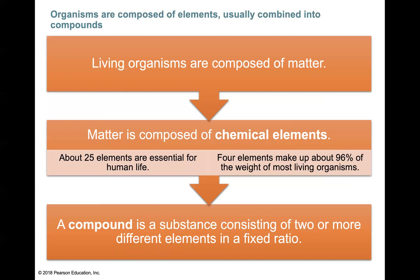At this point you've definitely taken a chemistry class and you've heard about the periodic table of elements. We're going to understand a little bit more how these elements that we find on the periodic table help to sustain life. Organisms are composed of elements, usually combined into various compounds. Living organisms are composed of matter. Matter is anything that has mass and takes up space. Matter is composed of chemical elements. About 25 of those elements on the periodic table are essential for human life.